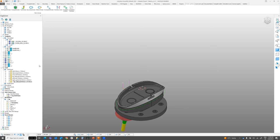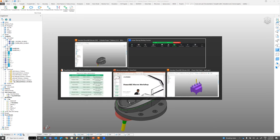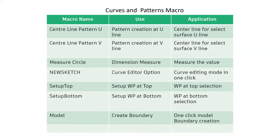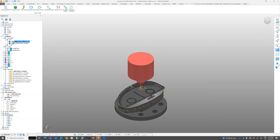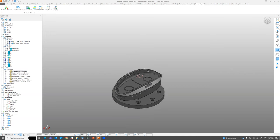Now moving to the second category of macros: Curves and Patterns. When you want to extract curves, use measuring tools, automate setup, create top and bottom work planes, or create boundaries — these are all covered in the second category. I'll go through them using the same example.